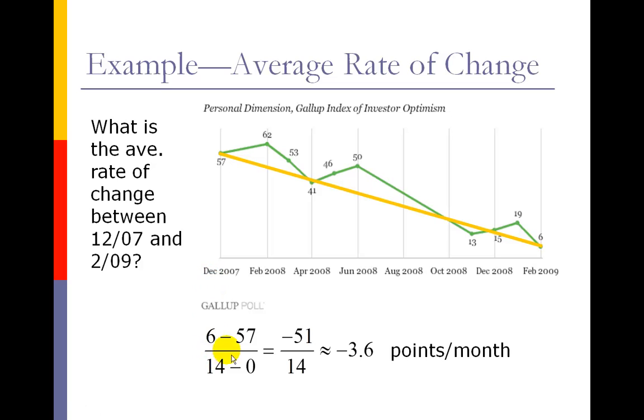For this example, I've called December 2007 time 0, and that's why you're seeing 14 minus 0 in the denominator. December 2007 is time 0, and that would make February 2009 14 months away, so that's where you get the 14.